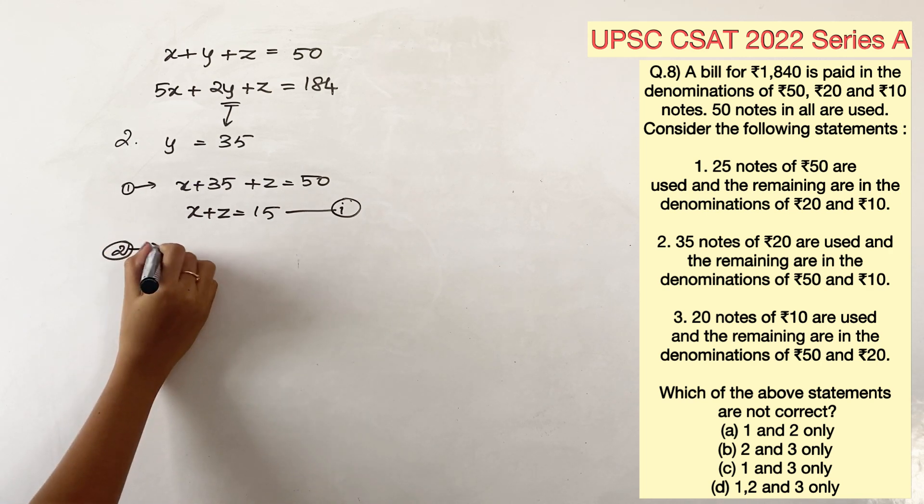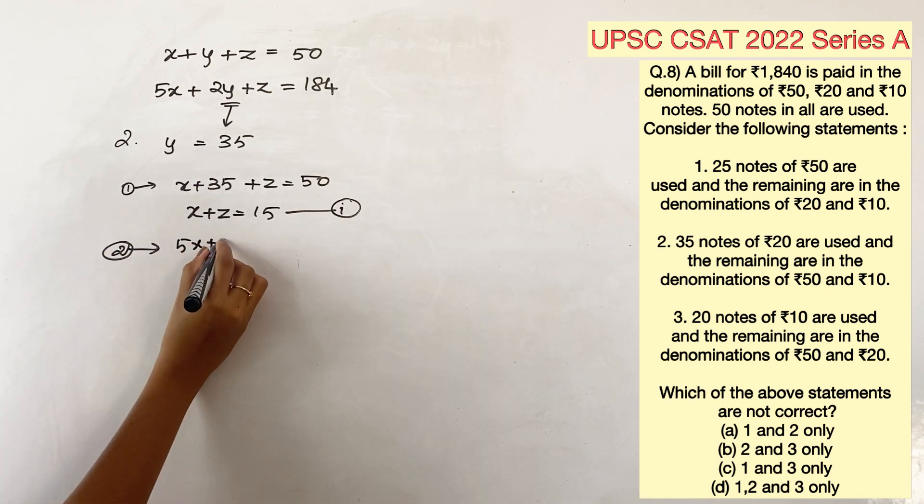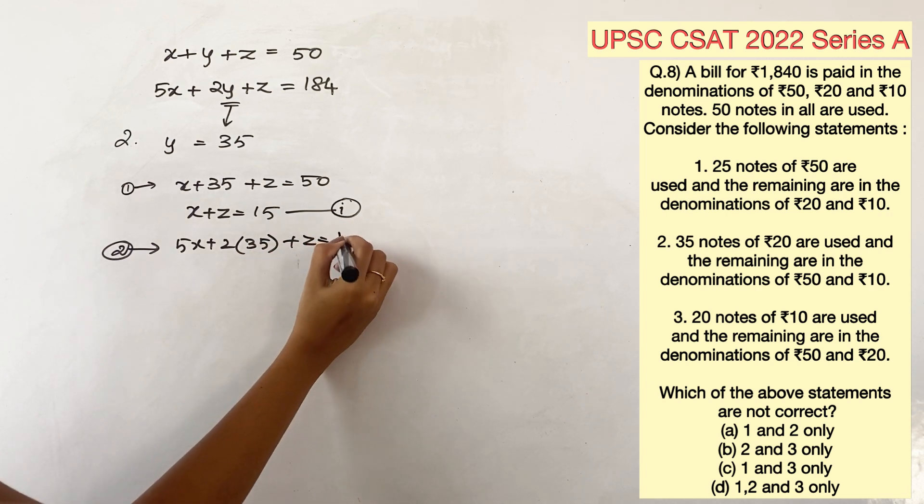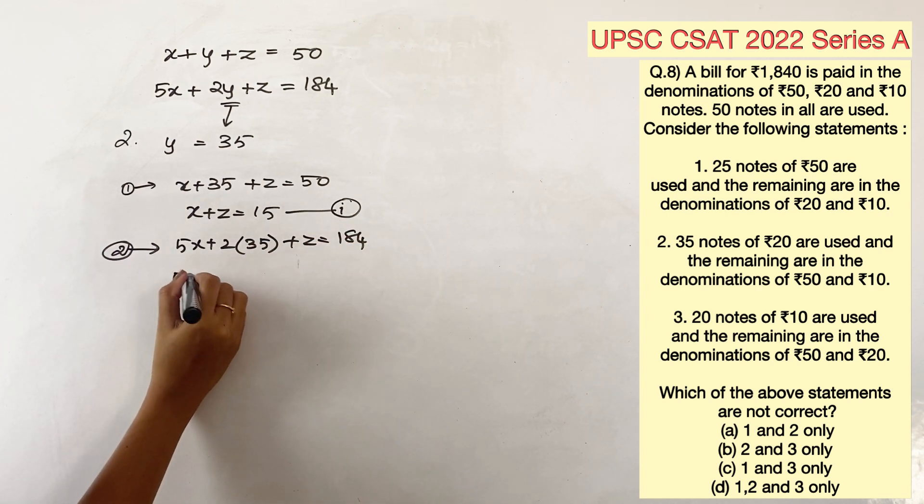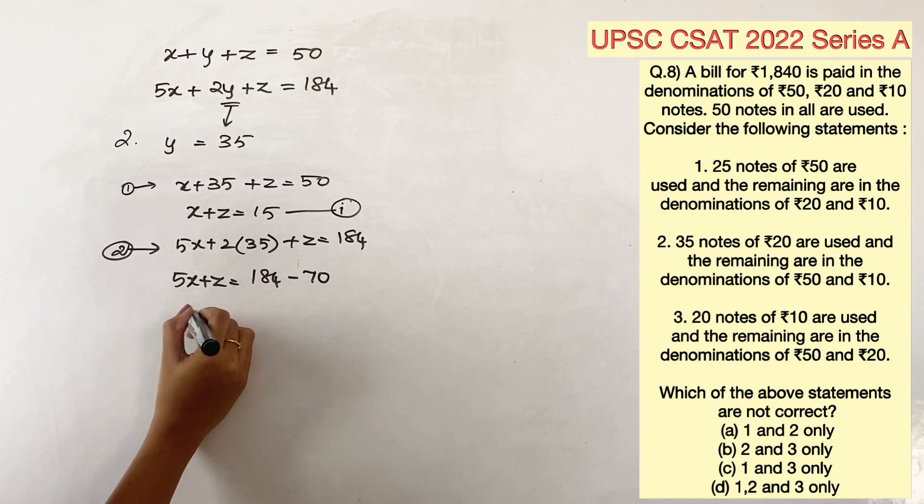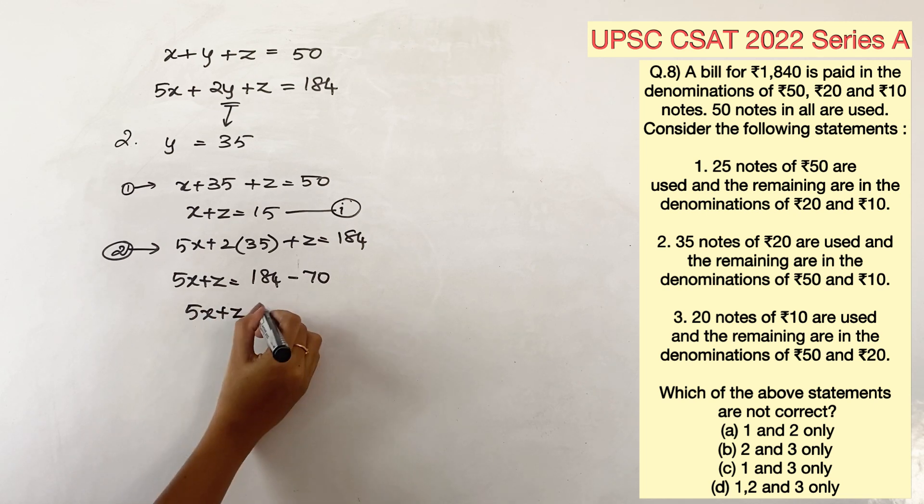The second equation will become 5x plus 2 into 35 plus z is equal to 184. 5x plus z is equal to 184 minus 70. 5x plus z is equal to 114.